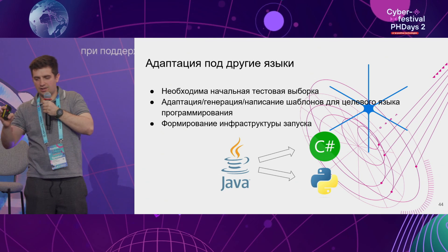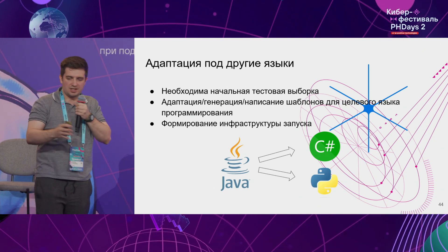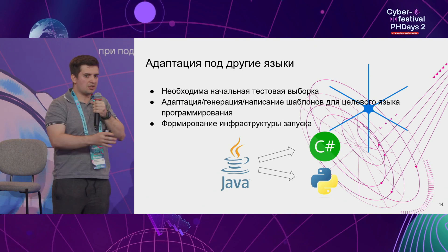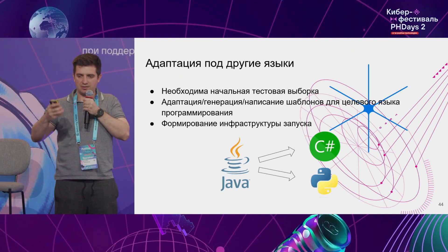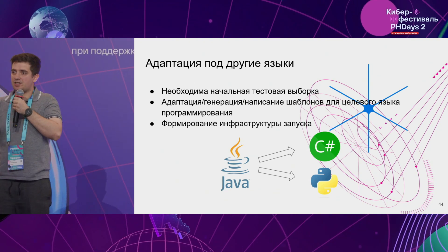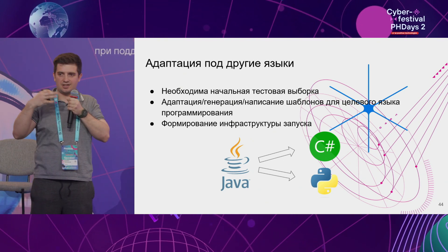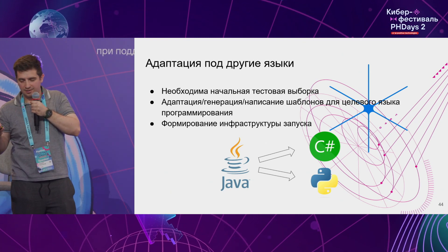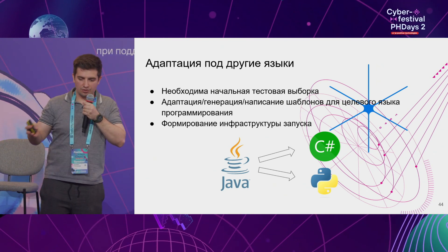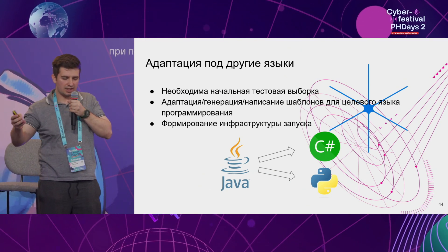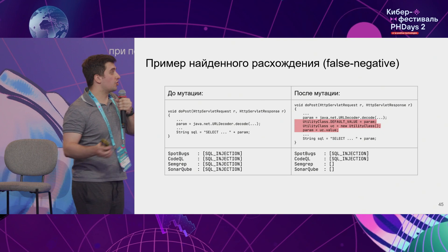We did something for Java — but how do you adapt that to other languages? First, we need a test sampling to get started. We can use ready-made test benchmarks, or if it's a very rare language, we can use LLMs to make the conversion. Next, we need to adapt our templates — from what they look like, they work for virtually most modern programming languages and can be transformed with minimum effort. Then we write run scripts and result formation scripts. When it comes to results comparison, this is already implemented on our site.